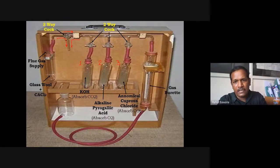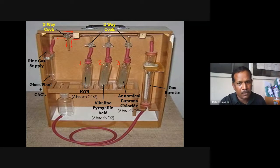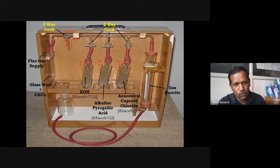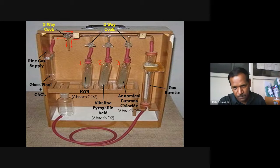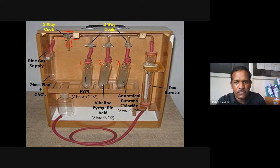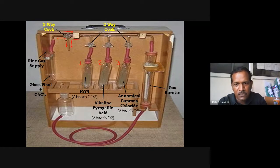The next part of the apparatus is the gas burette. Whatever flue gas sample we are supplying for analysis should be a known volume. So we allow a known volume for analysis. The gas burette is calibrated so we know how much gas is present. Outside the gas burette there is a large glass tube filled with water, serving as a water jacket.